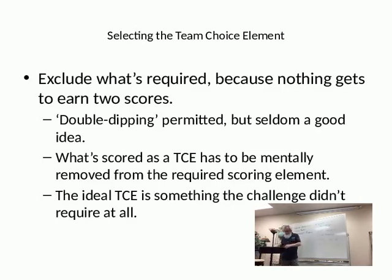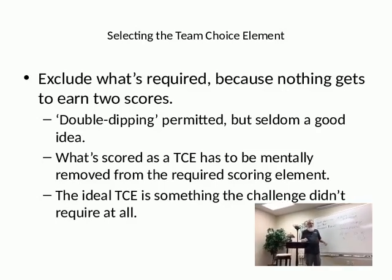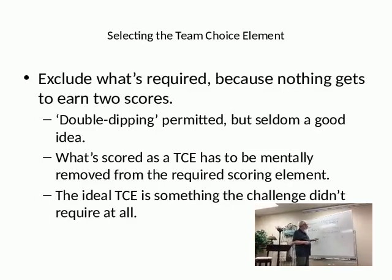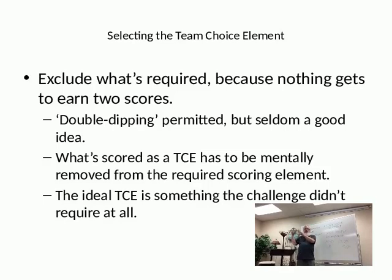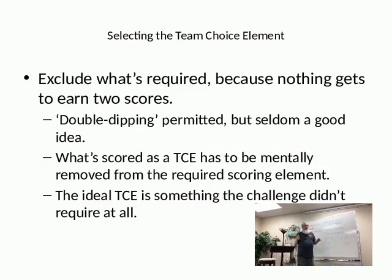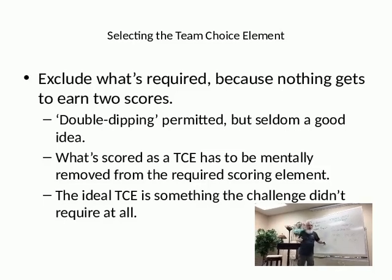That is called 'double dipping' among most of the appraisers. The problem with double dipping is it makes appraisers work harder — they have to say, 'Okay, I'm going to exclude that. I'm going to exclude the helmet made with plastic spatulas. Cool as it is, I have to think of it without the spatulas and say, well, it's a so-so helmet now.' So when you do that, you're better off going to something that isn't required at all. That's where you get a chance to shine.